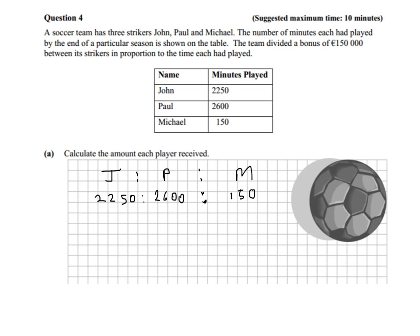This question is from the year 2012, paper 1, question 4. The soccer team has three strikers: John, Paul and Michael. The number of minutes each had played by the end of a particular season is shown in the table. The team divided a bonus of £150,000 between its strikers in proportion to the time that each played.